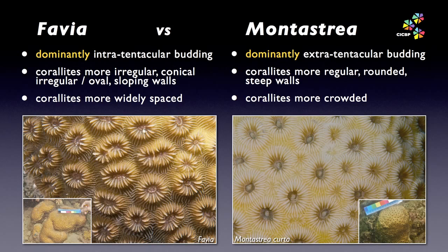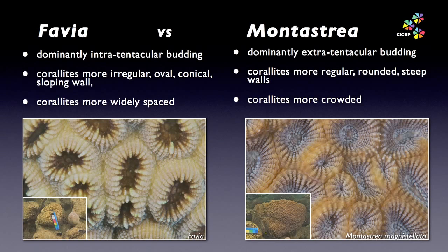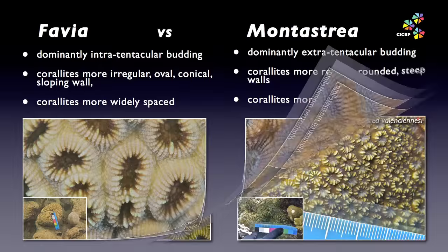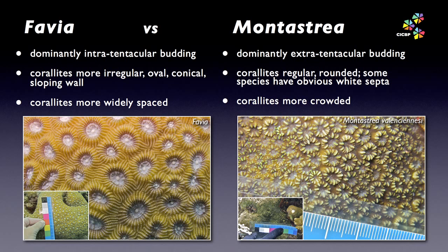Here are two well-behaved examples of Favia and Montastria showing the classic differences. Note the scale — not all colonies will be this helpful, but this is the mental image you need to channel. Note also the use of the word 'dominantly' — there will be some exceptions to the rule with regards to budding. A good look around the colony or swimming around the same habitat usually overcomes the problem. Here are two more examples using species with larger coralites. Underwater, you learn to recognise the look of each genus, and when your suspicions are aroused, you look at the budding to confirm.